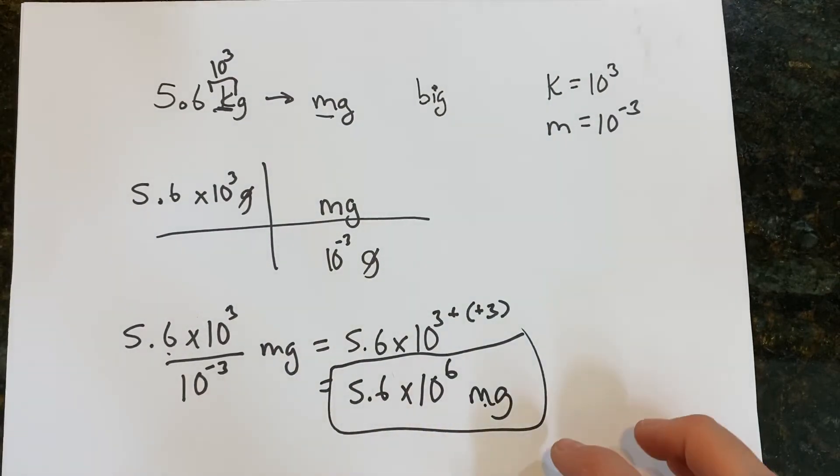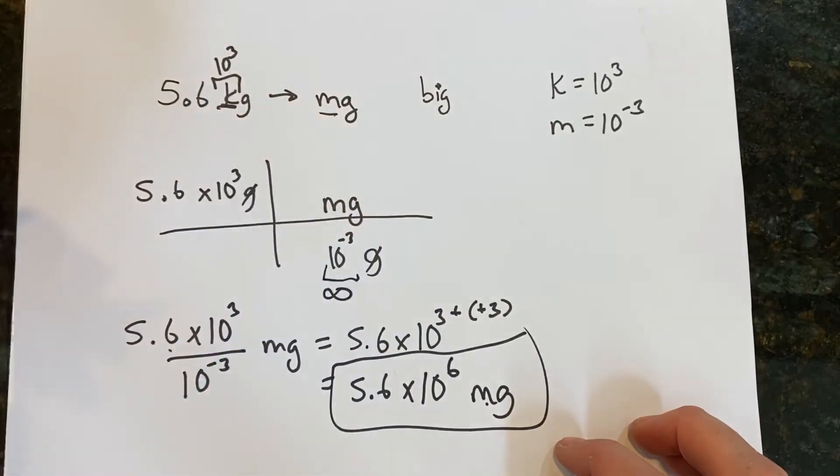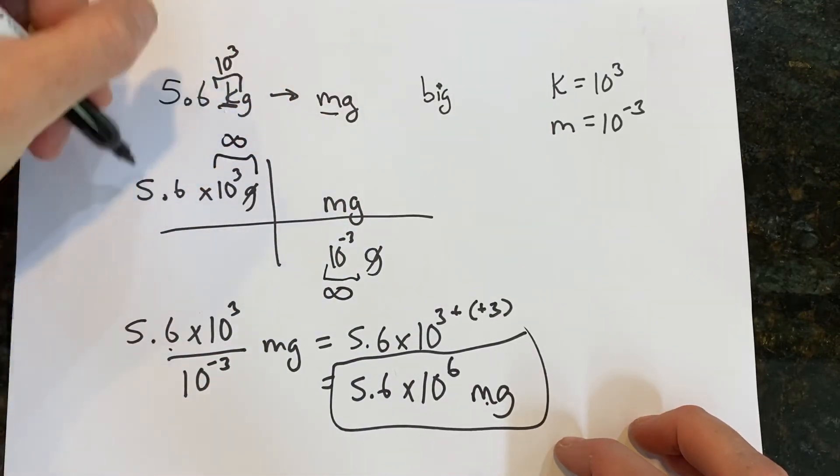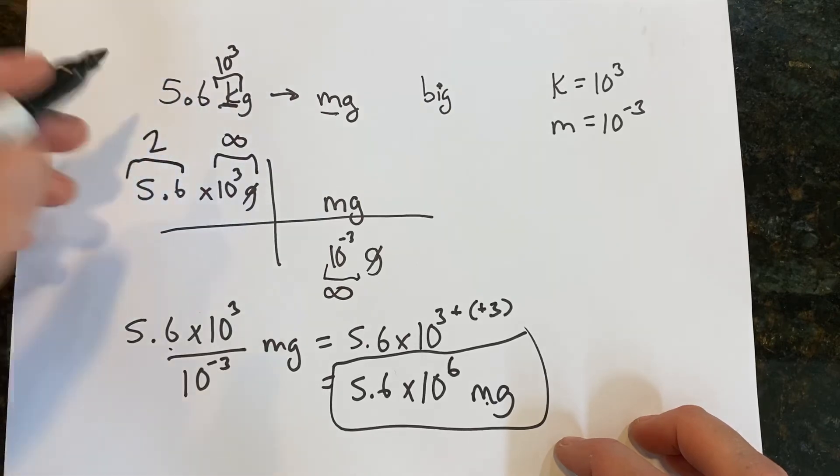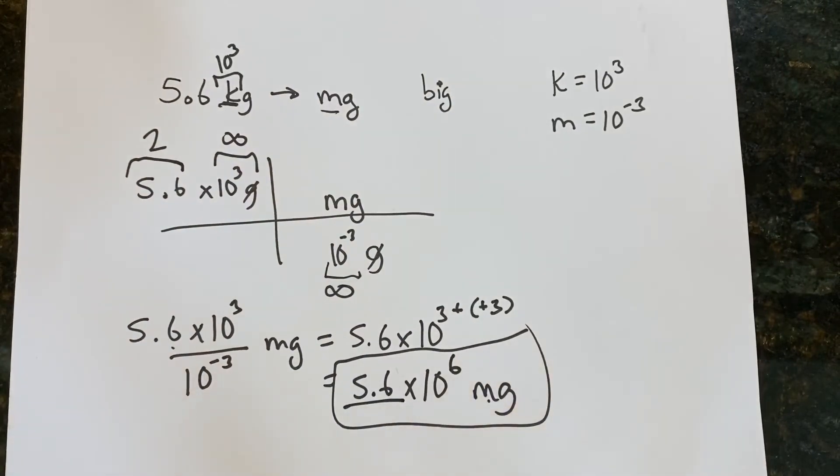If you want to look at sig figs, keep in mind these are exact numbers. They're exactly 10 to the negative third grams in a milligram, so that's got infinite sig figs. This has infinite, and this has 2. So 2, infinity and infinity, what's smaller? 2. And that's why our final answer is the way it is.